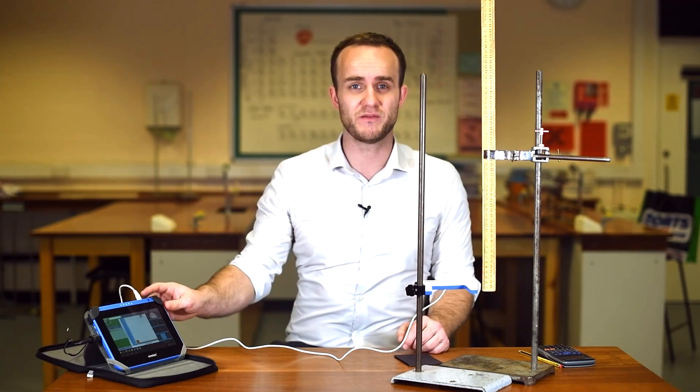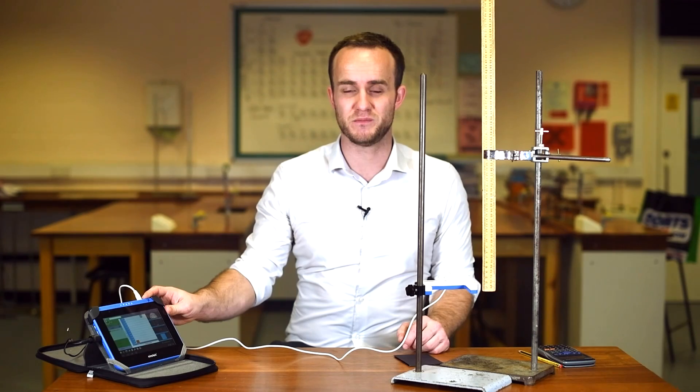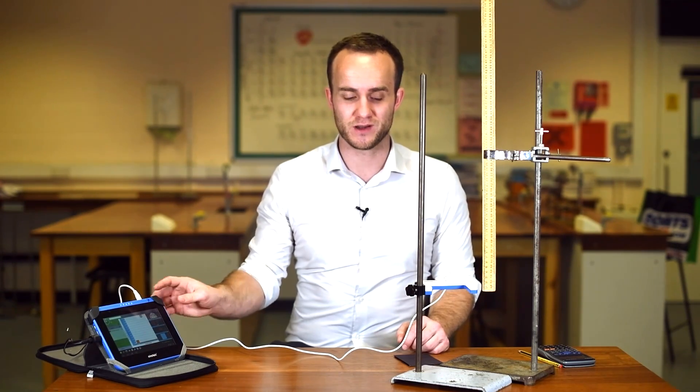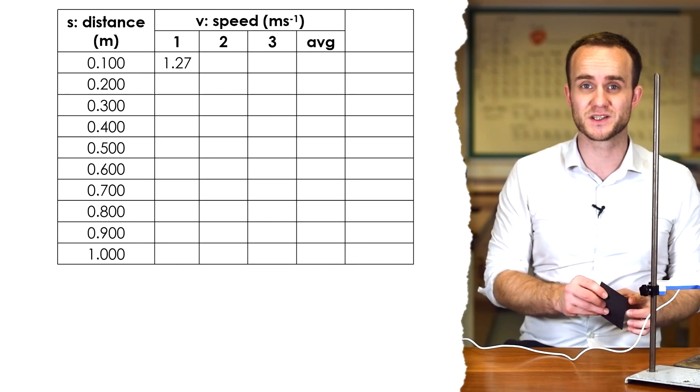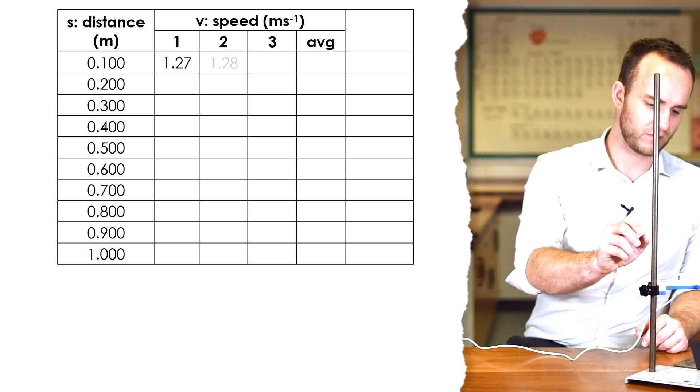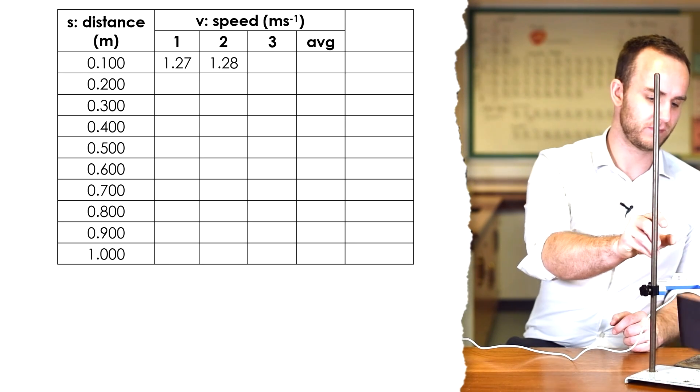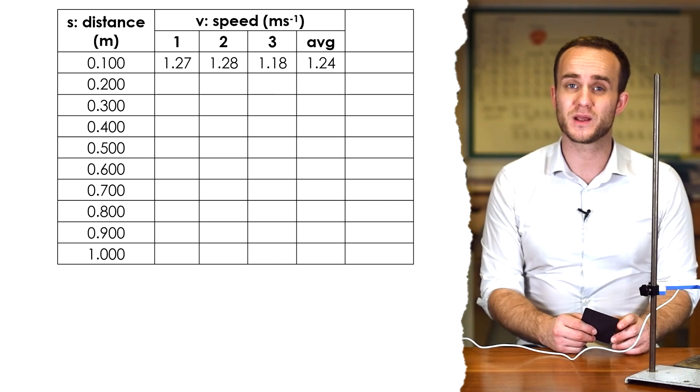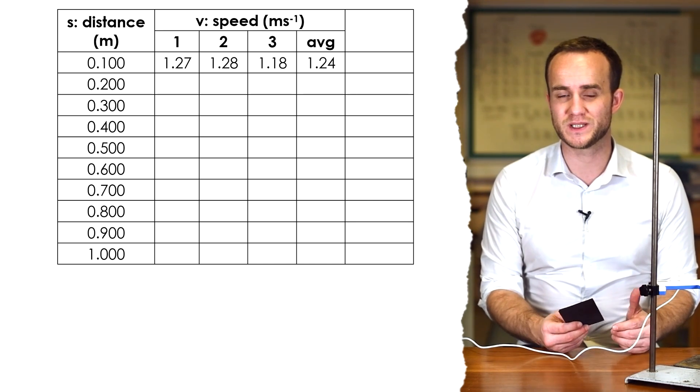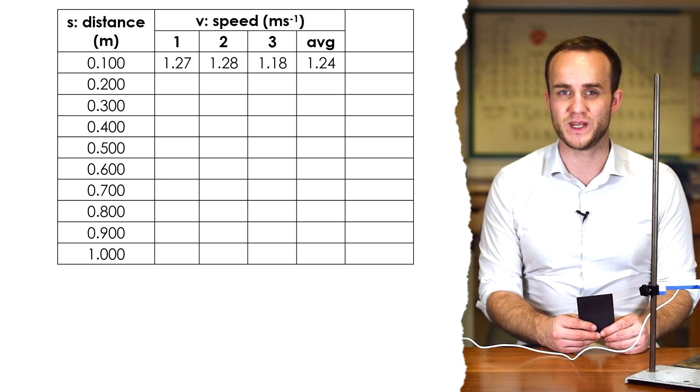The data logger is giving me a speed of 1.27 meters per second and it's calculated that because I've already put the length of the card in. Let's do it a second time - we definitely want to do repeats with this experiment - and a third time, calculating a mean average of those three speeds. Then I'm going to drop the card from 20 centimeters, 30 centimeters and so on three times and get an average speed for each distance.